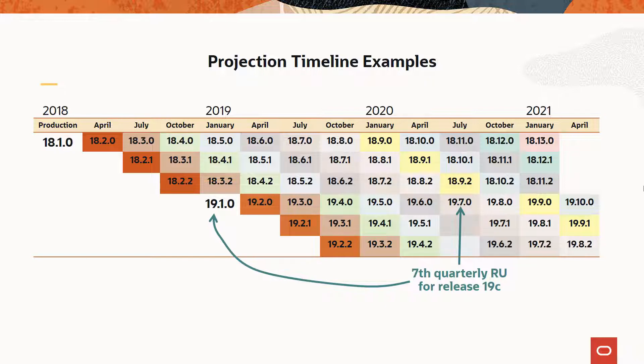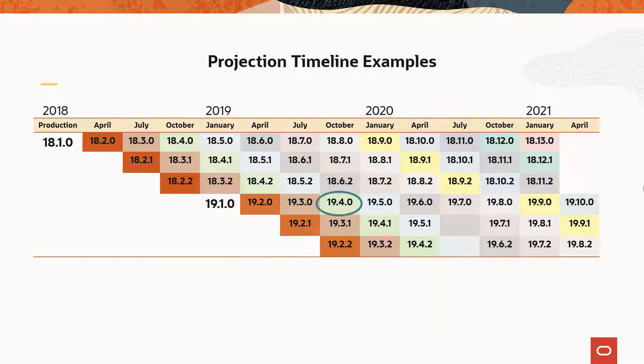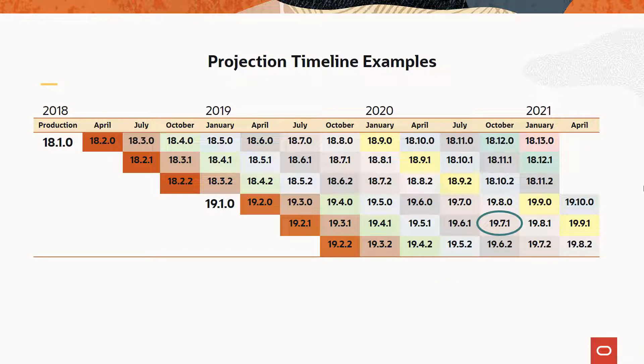Please note that several of the initial RUs are internal to Oracle, and the first publicly available RU is often the fourth quarterly RU, as in 19.4.0. That first publicly available RU will be provided the next quarter after the release is publicly available. Although only the first three fields are commonly used, you will occasionally see the fifth field with a numerical value that redundantly clarifies the release date of the RU, such as 19.7.0.0.2007.14.